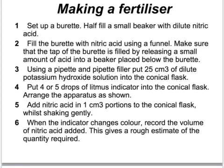To carry out this neutralisation reaction we use a method called titration, which involves using a burette. We start by filling the burette with nitric acid using a funnel, filling up the tap, then releasing the tap slightly to fill it, and taking a reading to zero or a particular value. We use potassium hydroxide as our alkali and measure exactly 25 cubic centimetres of it into a conical flask using a measuring pipette. To tell us when neutralisation has occurred, we add an indicator — such as litmus or phenolphthalein.